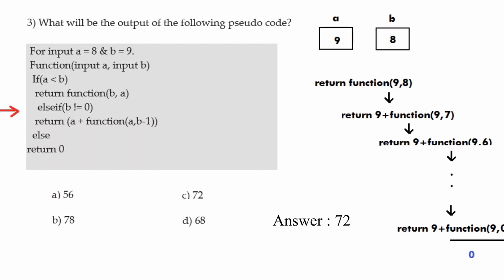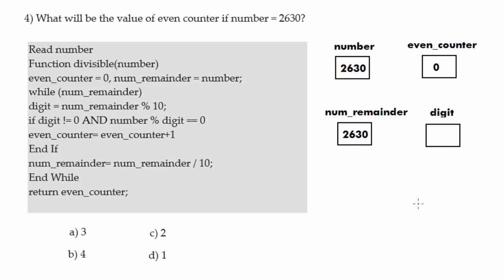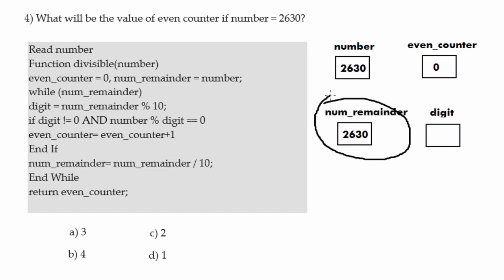So our answer is 72, since 9 times 8 equals 72. Moving to the fourth question: the first statement is 'read number', meaning we read a number from the user, which is 2630. There is a function named 'divisible' taking one argument: number. Inside it we have a variable even_counter initialized to 0, and a variable number_reminder initialized to the value of number, which is 2630. The loop iterates while number_reminder is not 0.